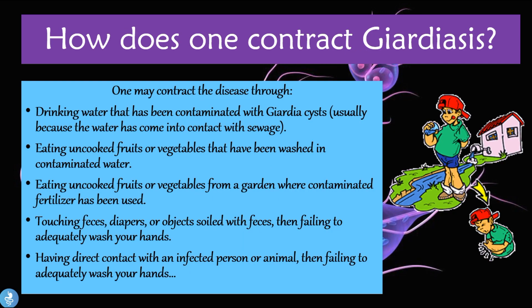How does one contract Giardia? The majority of patients and animals become infected from contaminated soil and water sources. One may contract the disease through drinking water contaminated with Giardia cysts — usually because the water has come into contact with sewage — eating uncooked fruits or vegetables washed in contaminated water or grown where contaminated fertilizer was used, touching feces, diapers or soiled objects without adequately washing your hands, or having direct contact with an infected person or animal and failing to adequately wash your hands.